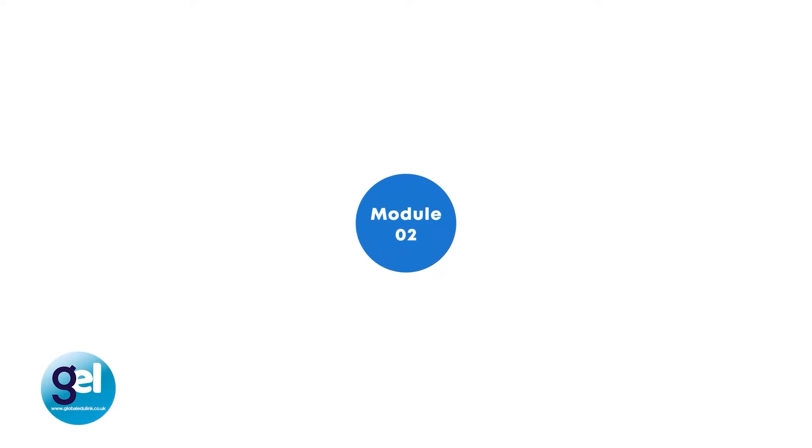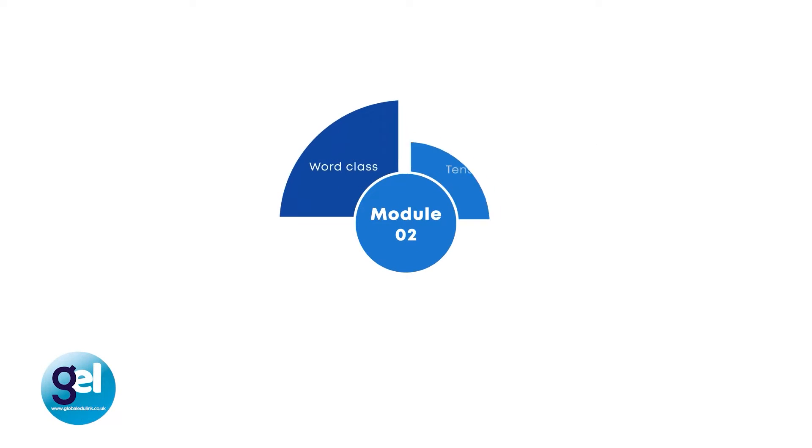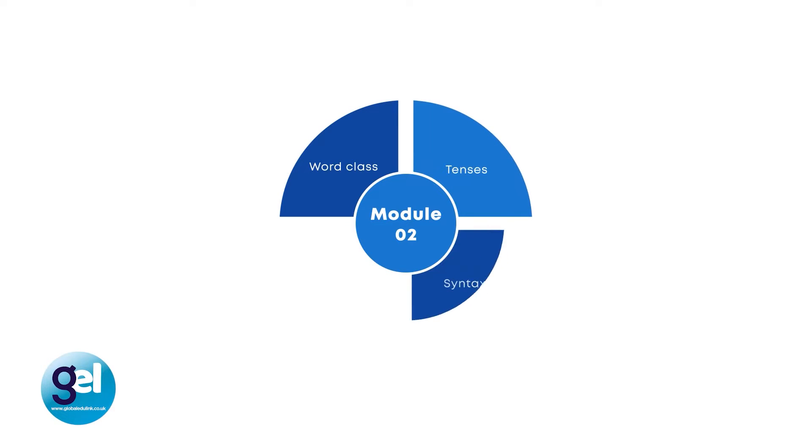Understanding English grammar. In this module we will focus on the use of word class, tenses, syntax and sentence types. Do you know what a verb is? Can you explain the present perfect to a group of students? Do you know the difference between a countable and uncountable noun? This module will equip you with all the relevant information in understanding English grammar.